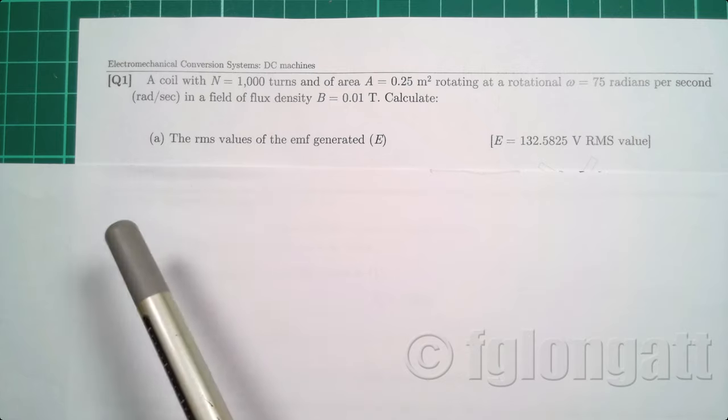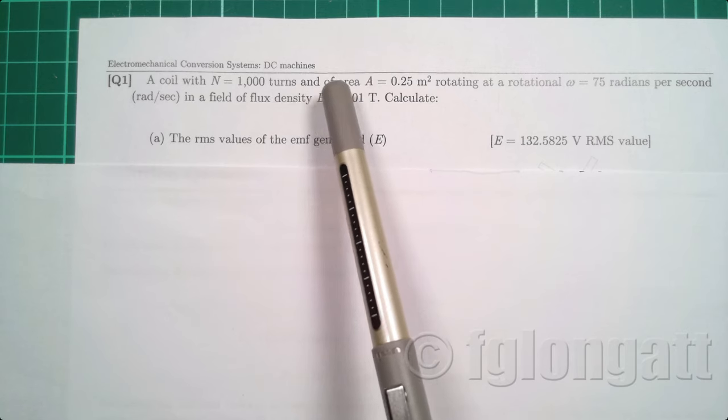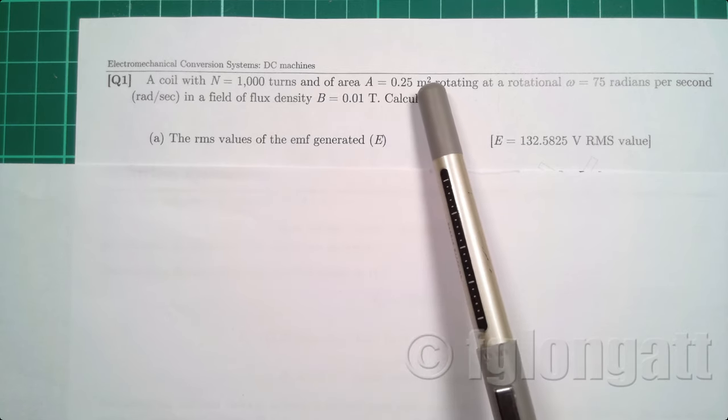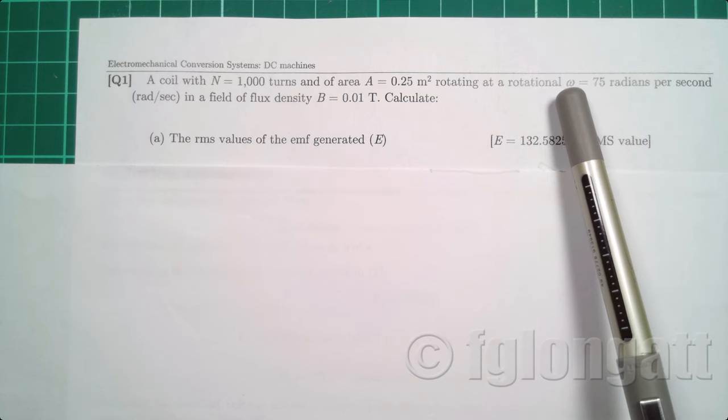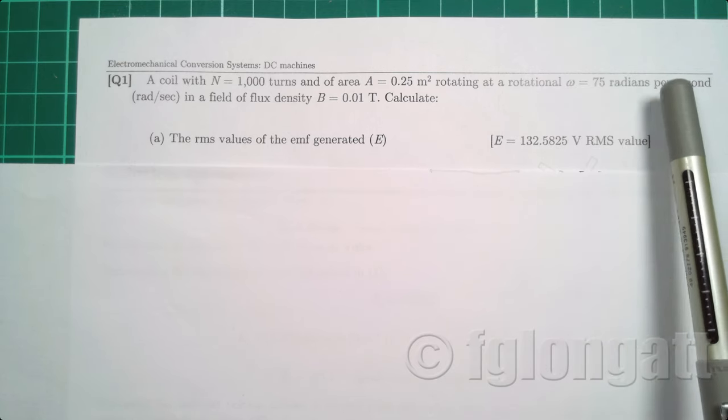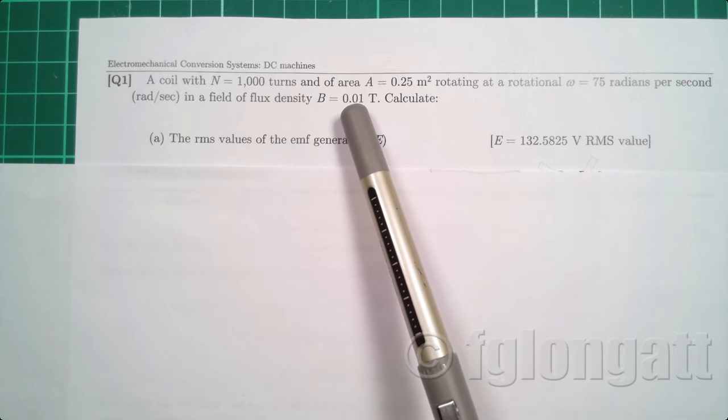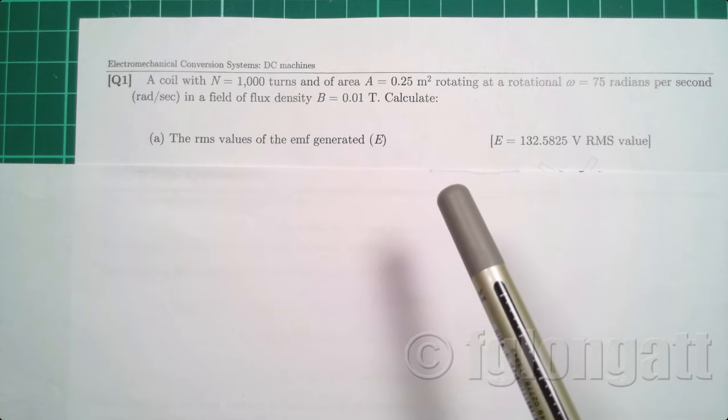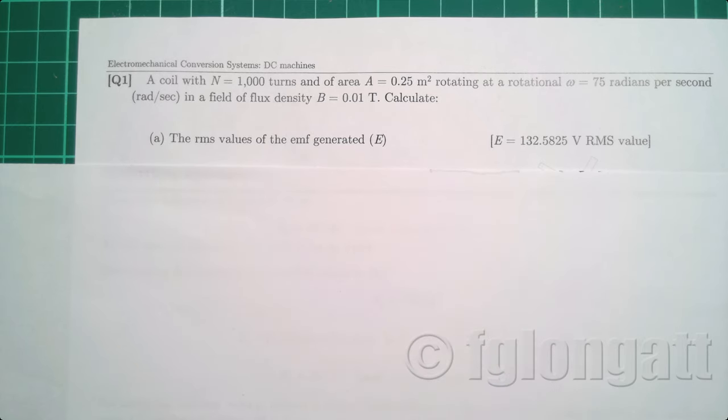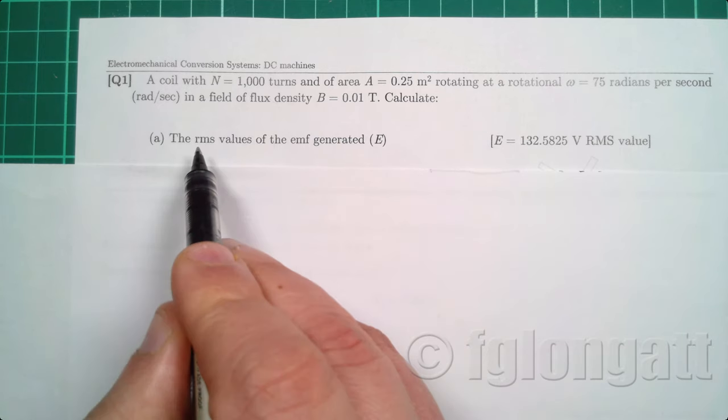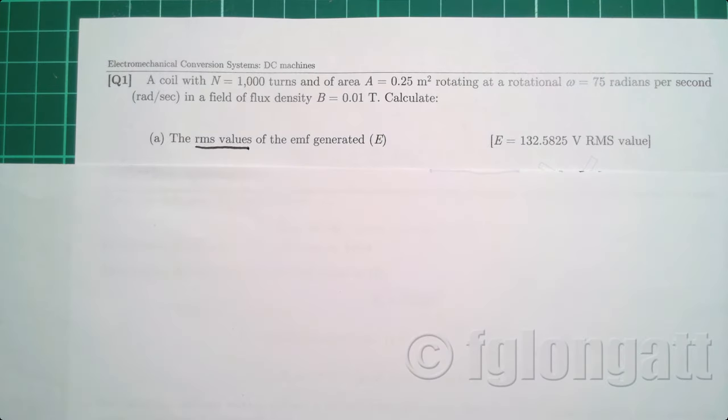Let's start reading this very interesting statement. A coil with 1000 turns and a cross section area of 0.25 square meters is rotating at a rotational speed of 75 radians per second, and all of this inside a magnetic flux density B equals 0.01 Tesla. So here there is a simple question to calculate the RMS value of the EMF generated. Be careful because the question is related to RMS value.